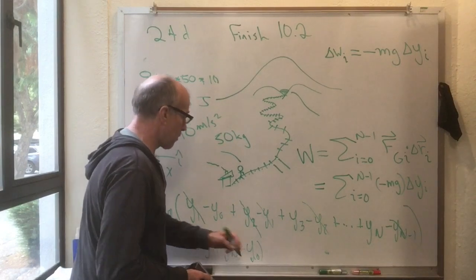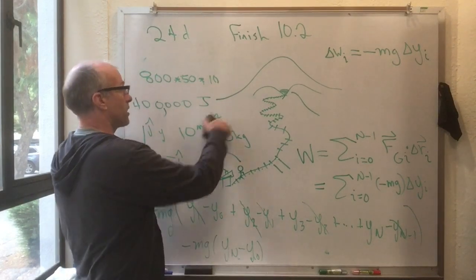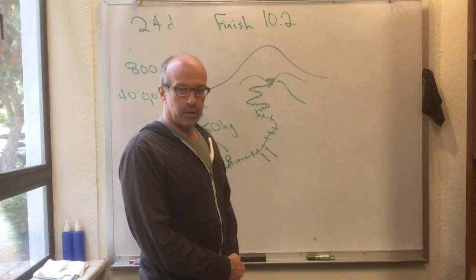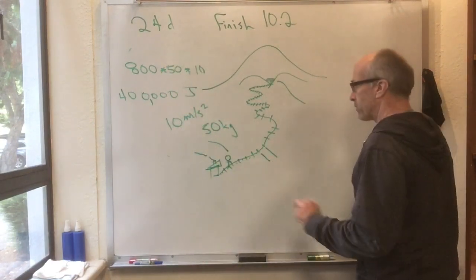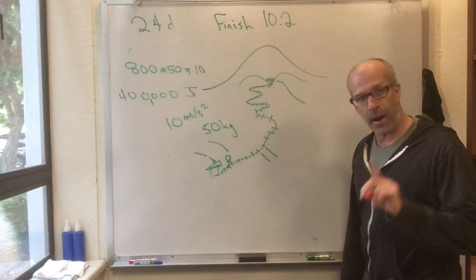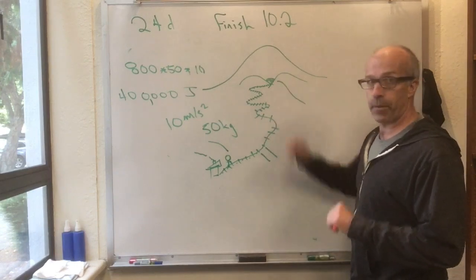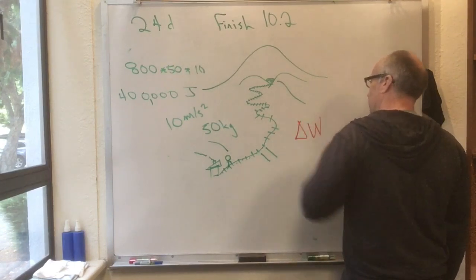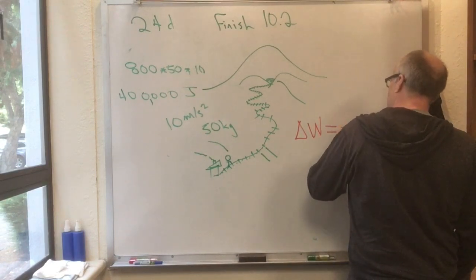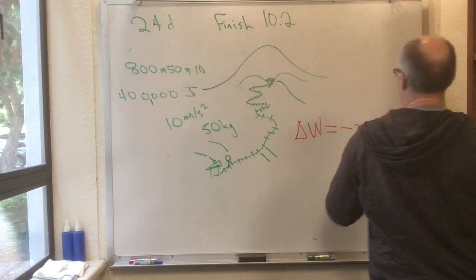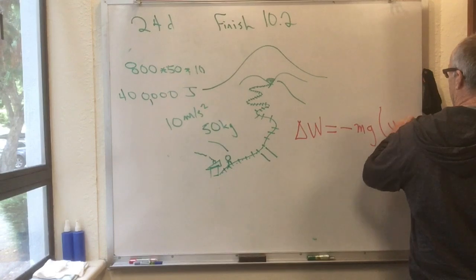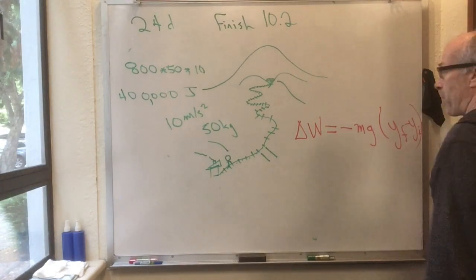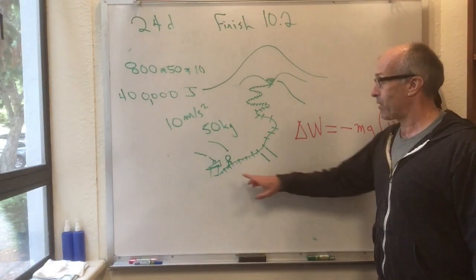Which, of course, is the whole change in elevation. So, let's summarize that. We have shown that the work done by gravity, which, if you're going up, is negative. The work done by gravity is delta w is equal to minus mg times y final minus y initial. And it doesn't matter what path you take.